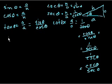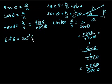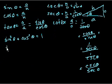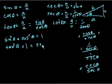We also learned in previous videos that sine squared theta plus cosine squared theta equals 1 — that comes from the Pythagorean theorem. If you play around with that a little bit, you also get that tangent squared theta plus 1 equals secant squared theta, which you get by dividing both sides of the first equation by cosine squared.